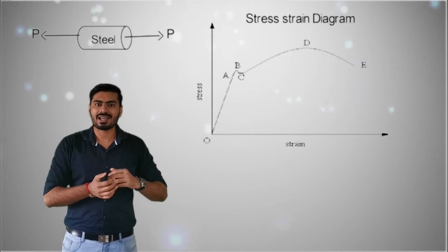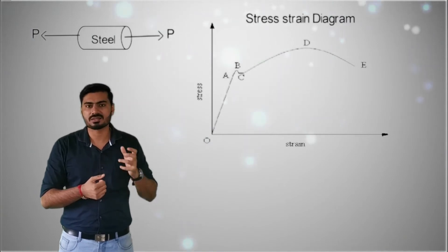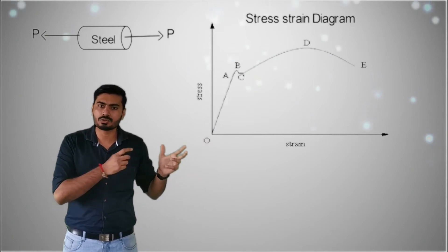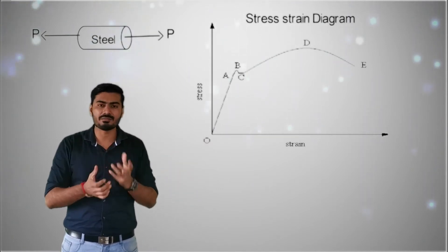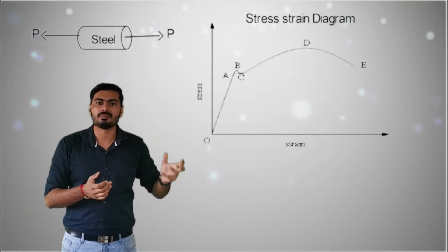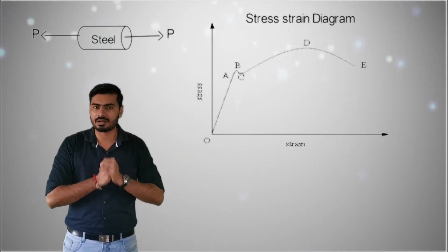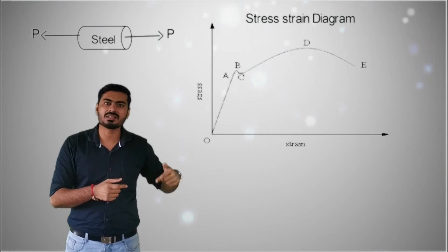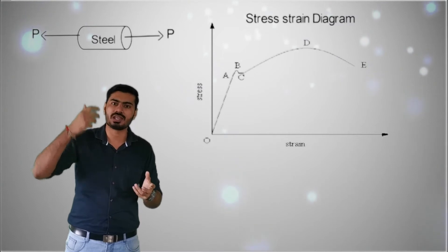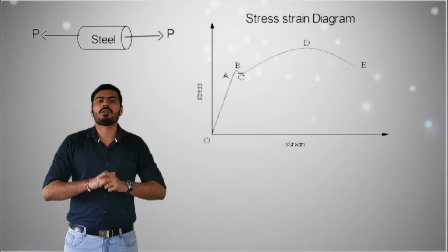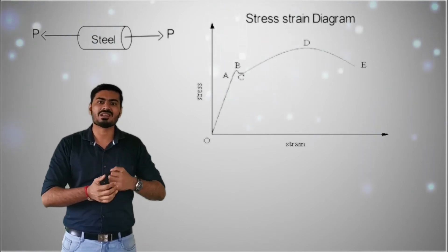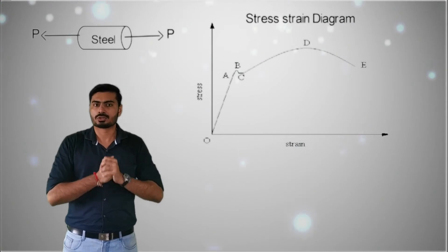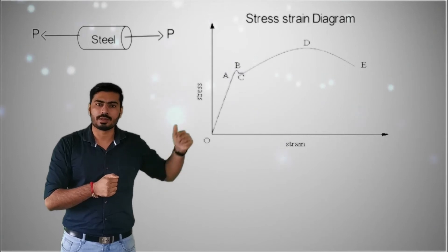We will plot a diagram between the stress and strain parameters. The strain will be the independent variable on the horizontal axis, and the stress will be the dependent variable on the vertical Y axis. When you increase the value of force P it will ultimately increase the strain value, and this increment in strain will also increase the stress value. If you plot this relationship, you will get the region from O to A.